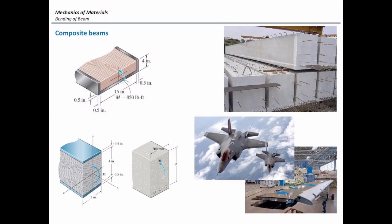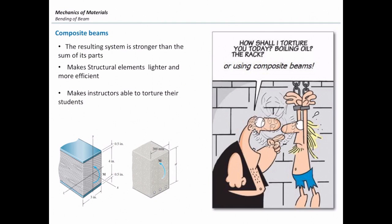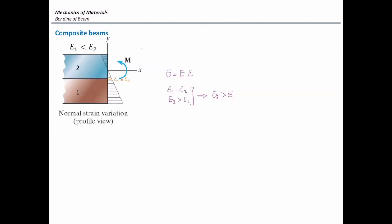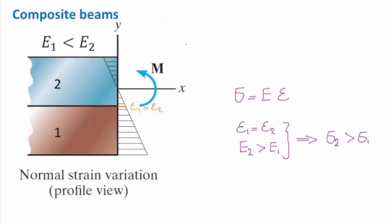Today we'll talk about what a composite beam is and how to solve problems related to composite beams. Let me consider a simple case: a beam made of two different materials, material one and two. I assume that the modulus of elasticity of the second material is larger than that of the first material. This section is subjected to a moment M.